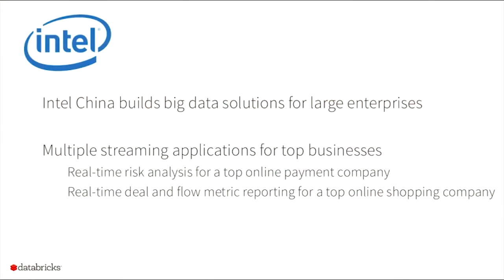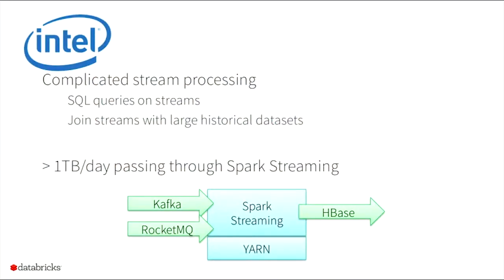Looking at some specific use cases: Inter-China builds big data solutions for large enterprises. They do real-time risk analysis for a top online payment company and real-time deal and flow metric reporting for a top online shopping company. Their pipelines involve SQL queries on streams, joining streams with large historical datasets, and they process almost one terabyte per day through Spark Streaming running on YARN, receiving data from Kafka and RocketMQ, and pushing it out to HBase.